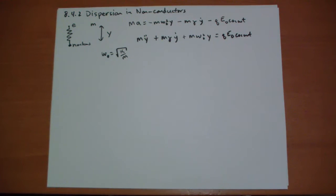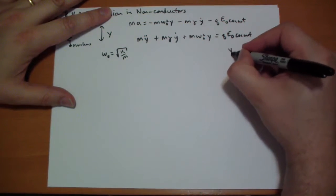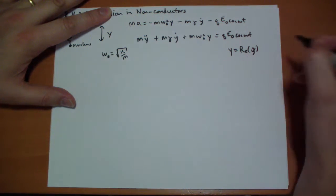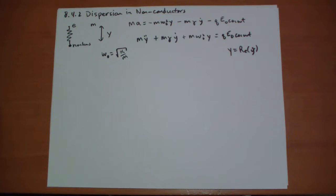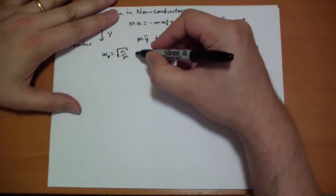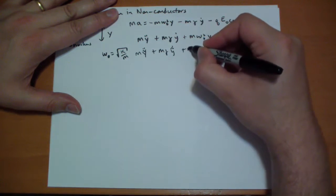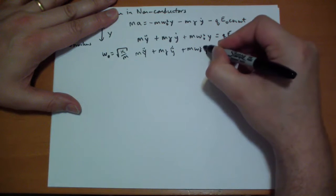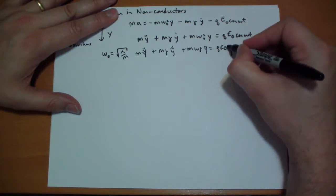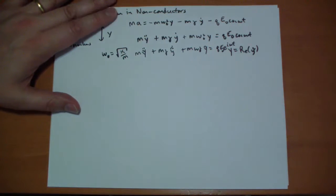Now we're going to put on our big boy pants and we're going to work with the complex numbers rather than real numbers. So Y is just going to be the real of the complex of Y. And that's going to be true for pretty much anything we talk about in a complex sense. The real is the actual physical value that we can measure. So we're going to change this to M Y complex double dot plus M gamma Y complex dot plus M omega naught squared Y complex is equal to Q E naught I to the omega T.